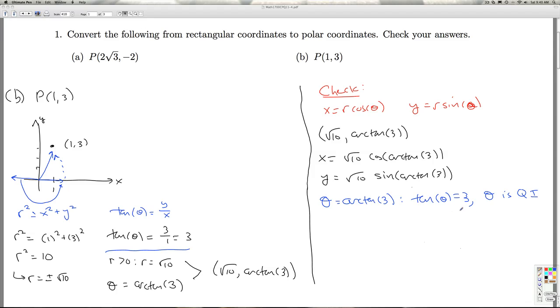So I'll go back to my identities. 1 plus tangent squared theta is secant squared theta. So secant squared theta is tangent squared theta plus 1.